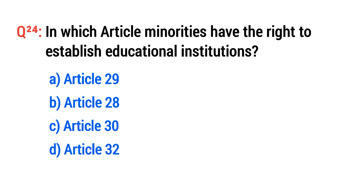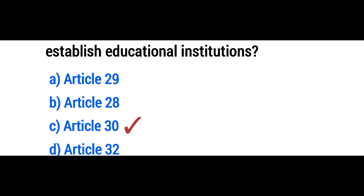Question number twenty-four: In which article do minorities have the right to establish educational institutions? The right option is C: Article 30.